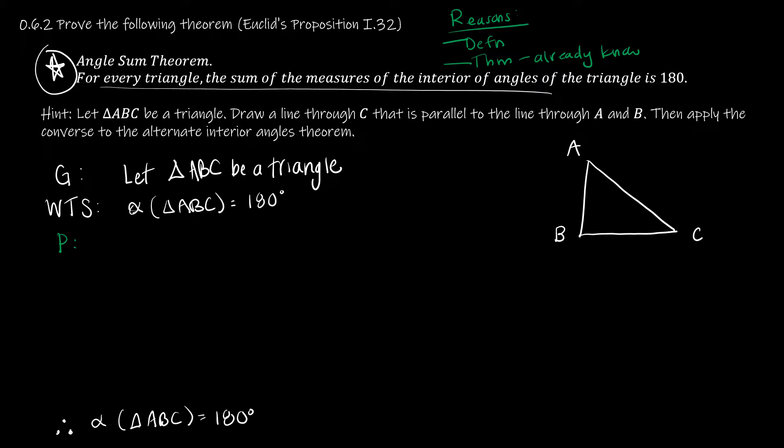How do I know how to fill in the middle? You don't — quite often it takes a while to figure out. For this particular question they've given a hint: let triangle ABC be a triangle (I've already done that — that's my given), and draw a line through C parallel to the line through A and B, then apply the converse to the alternate interior angles theorem. I'm assuming you've already read the textbook up to section 0.6, which has all the theorems available. I'm going to use the hint, but I'll be specific about it in my proof. I'll say: construct point D on the exterior of triangle ABC such that angle ABC is congruent to angle BCD.